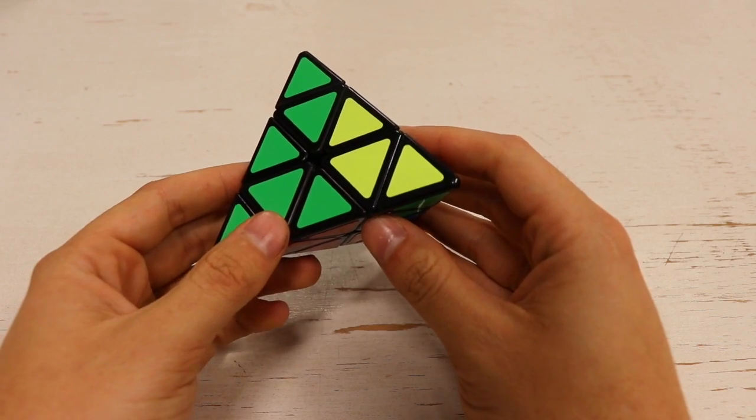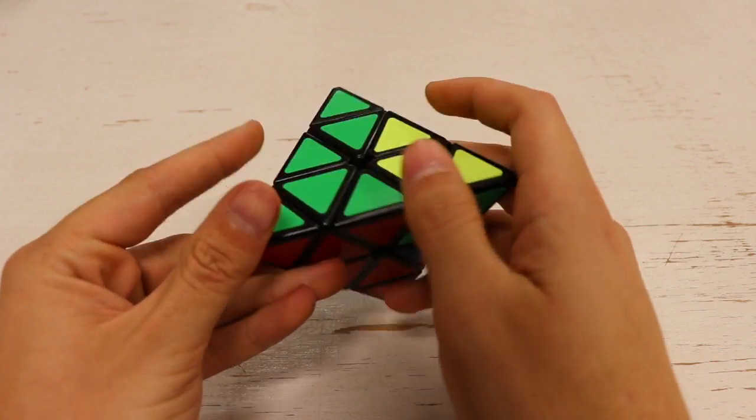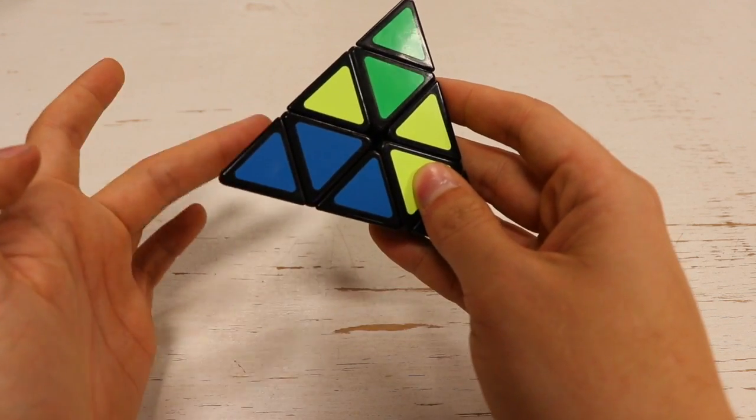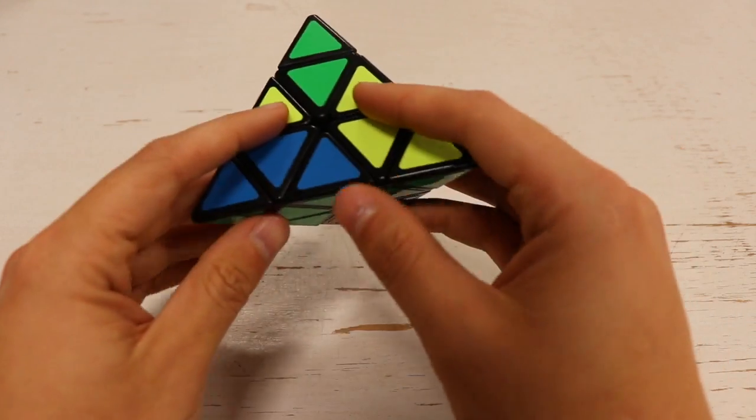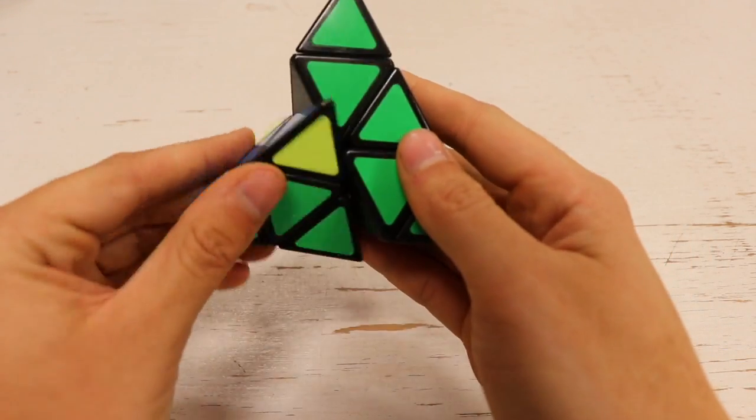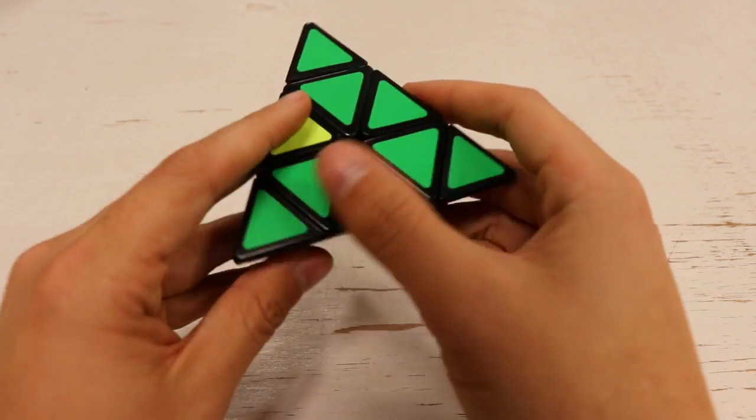What we need to do is since we rotated this right side and we put this where it belongs, we need to tuck this out of the way. So we're going to take this green and rotate it on the back over here. Now we can take this and put it back where it was and we can undo that rotation. And you see now it is solved.